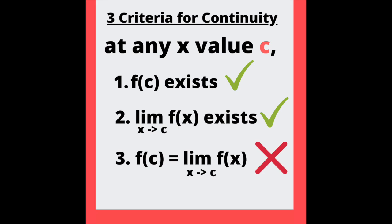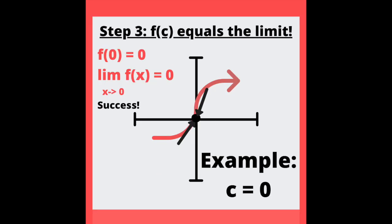Step three: compare your answers from step one and two. Are they both the same? If they are, great — you have mathematically proven the continuity trait. If not, this trait is not in fate.